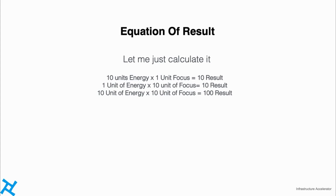Let me calculate it. You have 10 units of energy and 1 unit of focus — your result is 10. You have 1 unit of energy and 10 units of focus — your result is also 10. You have 10 units of energy and 10 units of focus — your result is 100. For example, if you study in front of a TV with the best book, or study hungry without food — you'll keep thinking about food and can't concentrate. Or you're fully prepared in a quiet room but don't have the correct study material. The best result is when you have 100% effort with 100% focus.